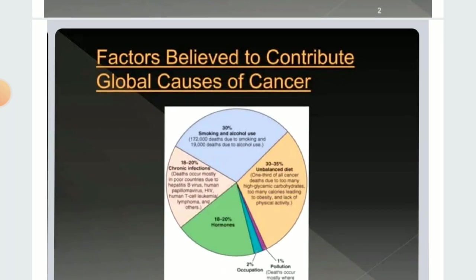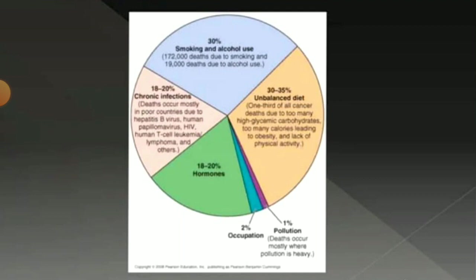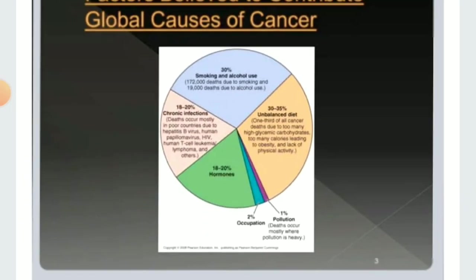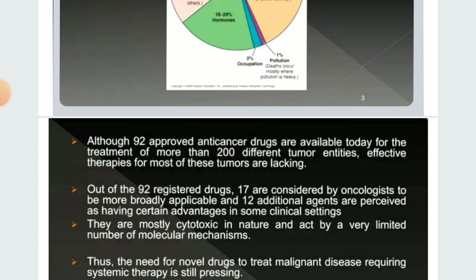The factors that contribute to cancer all over the world are: diet is the most important factor — an unbalanced diet accounts for 30 to 35 percent of total cancer cases. Smoking and alcohol use account for 30 percent. Chronic infections and hormonal changes each account for 10 to 20 percent. Occupational causes account for 2 percent and pollution for 1 percent of cancer cases worldwide.